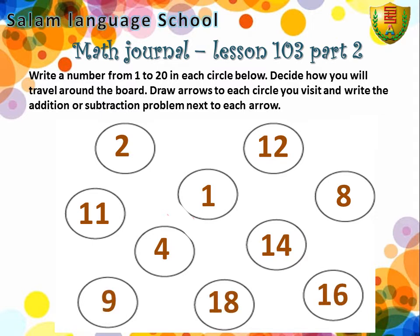We start from 2 to 12. We discovered that we added 10 to the number 2 to become 12. Then we go to 8. The 12 becomes 8; this means we subtract 4. We travel from 8 to 1. The number becomes smaller; this means we subtract 7.